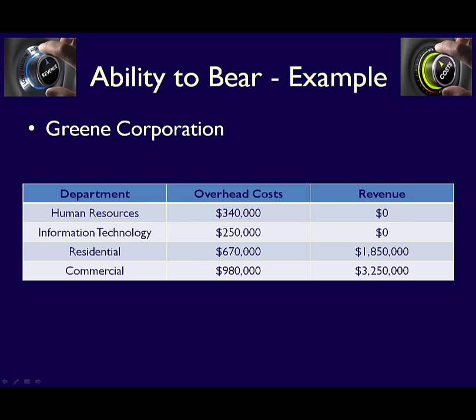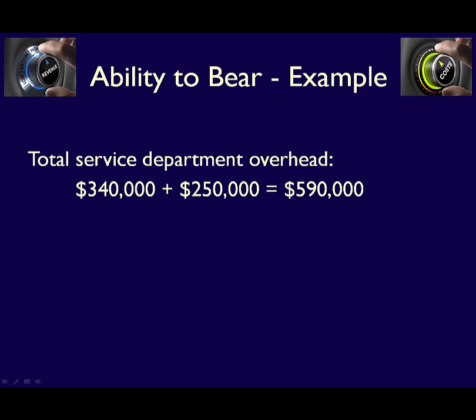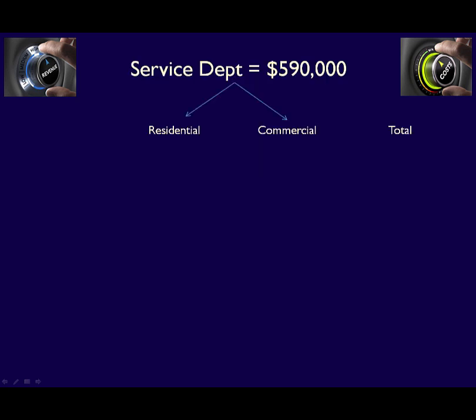Green Corporation also has a Commercial operating department with total revenue of $3,250,000 and direct overhead costs of $980,000. Service department costs are allocated based on a percentage of revenue generated. First, we calculate total service department overhead: $340,000 plus $250,000 equals $590,000 — this is the amount that must be allocated between the two operating departments, Residential and Commercial.